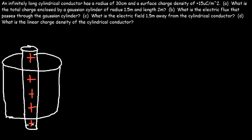Keep in mind, for a metal conductor, on the inside the electric field is zero because all of the charge is spread on the surface of the conductor. Positive charges repel each other, so they maximize the distance between them. Let's define big R as the radius of the cylinder and little r as the radius of the Gaussian cylinder.